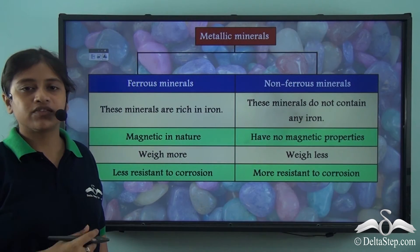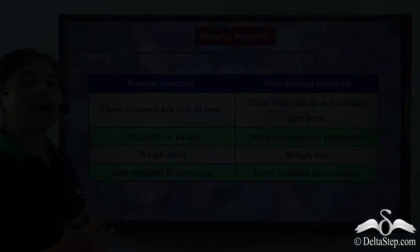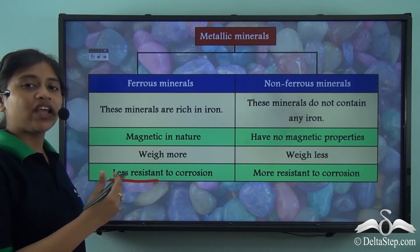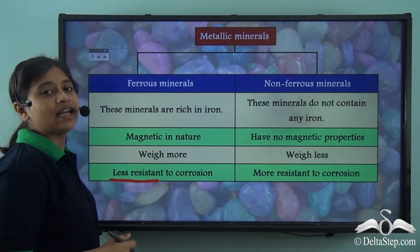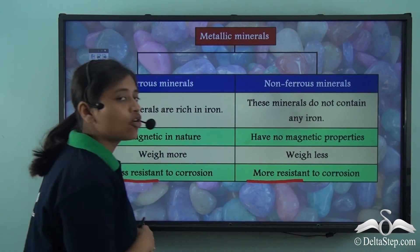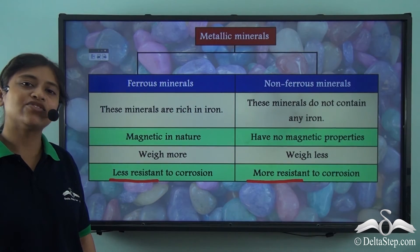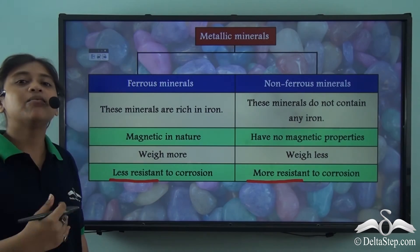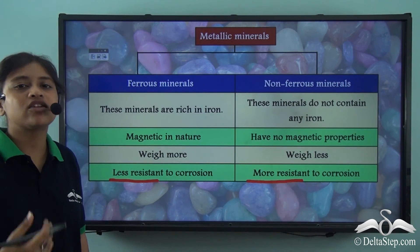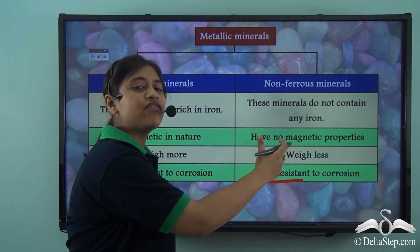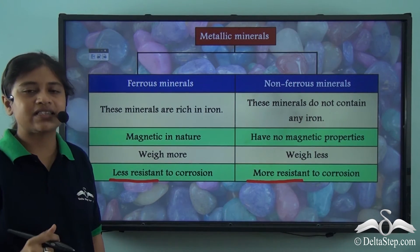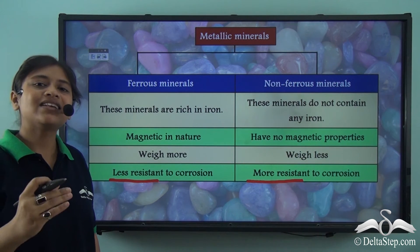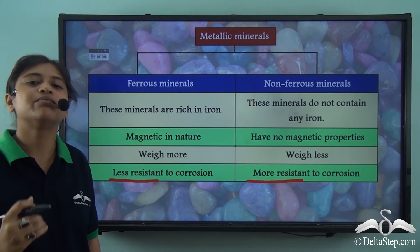The fourth point of difference is that ferrous metallic minerals are less resistant to corrosion — that is, they are more vulnerable to corrosion due to the presence of iron. On the other hand, non-ferrous metallic minerals have no iron present in them and therefore are more resistant to corrosion — they are less vulnerable to corrosion.